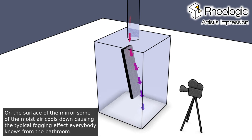On the surface of the mirror some of the moist air cools down causing the typical fogging effect everybody knows from the bathroom.